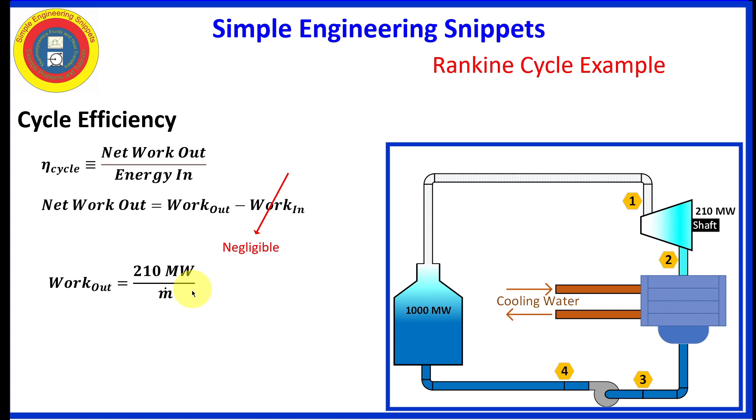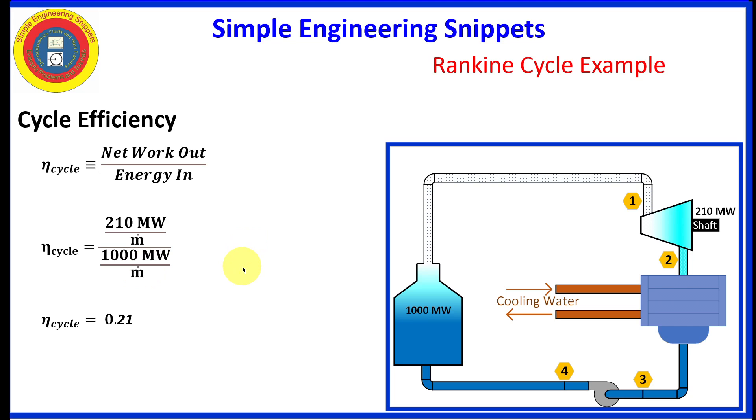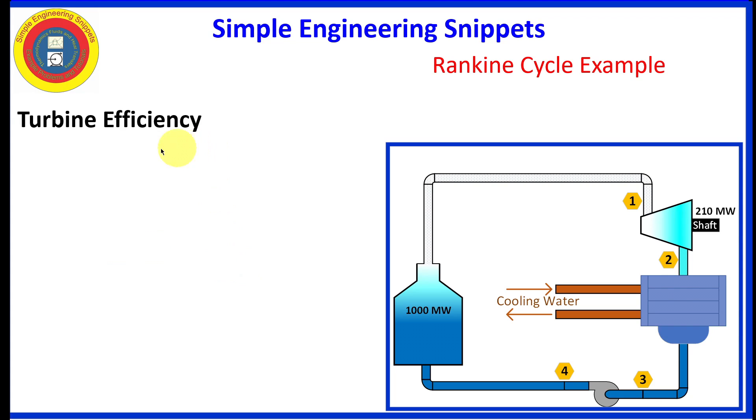To obtain specific work out, I would take the power out from the turbine and divide it through by the mass flow rate going through the turbine. That gives us specific work or energy per unit mass. Similar type procedure for the energy in by the boiler. We can divide that through by the mass flow rate and we are left with energy per unit mass. So to calculate the cycle efficiency, we can take the specific work out from the turbine divided by the specific work in from the boiler. And we get 0.21 or 21%. So that completes half the problem. But it's not really half because determining the turbine efficiency is going to be a little bit more involved.